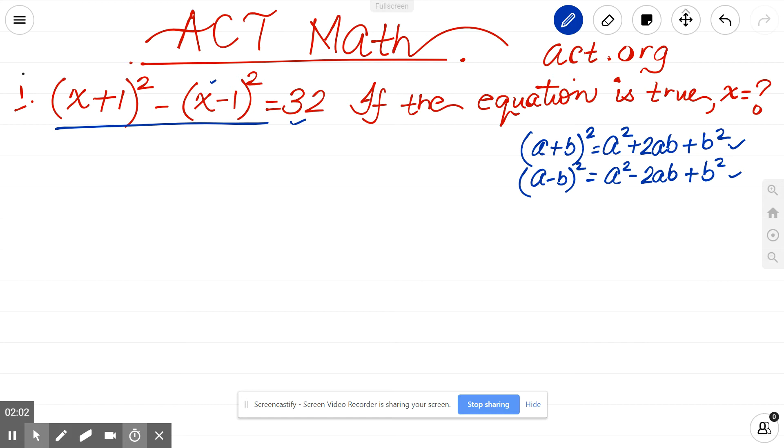All right. So if I apply (a+b)² here and (a-b)² here, my expression should look like x² + 2x + 1, b² is 1, b is 1. Now I should separate them with parentheses because of the minus sign here. This one will be x² - 2x + 1. Just applying the formula right here equals 32.